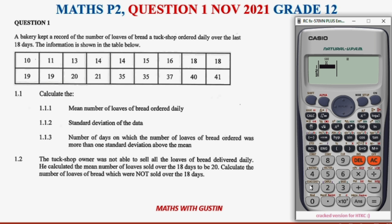Now we go ahead and enter the data into our calculator. We have 10, then 11, 11, 13, 14, 14. Then we've got 15, then 16. As you can see, the data is already arranged from the lowest value to the highest value — they've already done that for us. Then we've got three 19s.